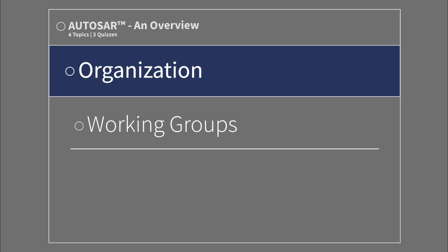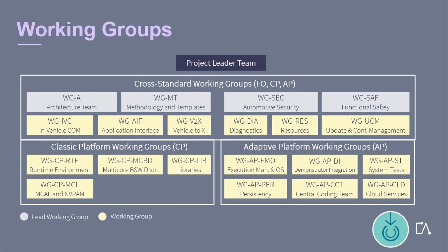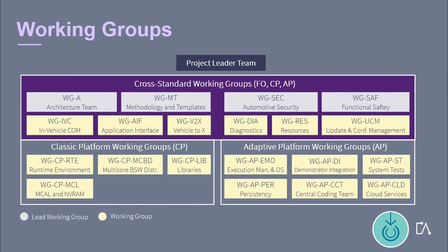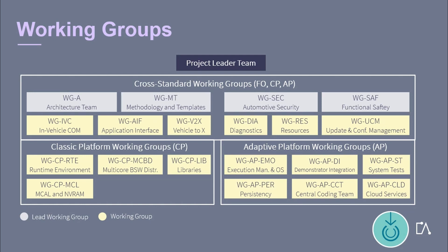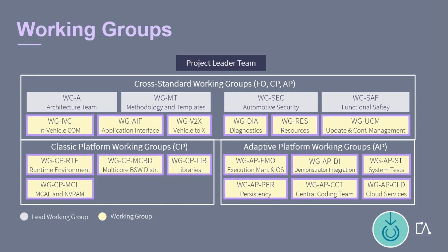The Working Groups are led by the Project Leader Team and are structured into three categories: Cross-Standard Working Groups, which define standards for both platforms — Classic and Adaptive — Classic Platform Working Groups (CP), and Adaptive Platform Working Groups (AP). There are two types of Working Groups: Lead Working Groups and Regular Working Groups. All activities are assigned to develop and maintain the Classic Platform, Adaptive Platform, Acceptance Test, Application Interfaces, and Cross-Standard Functions.